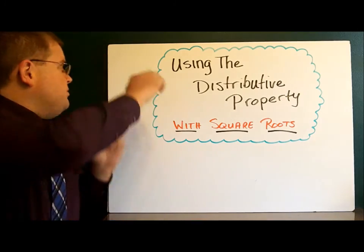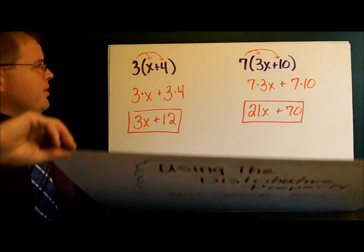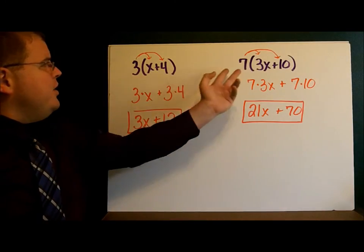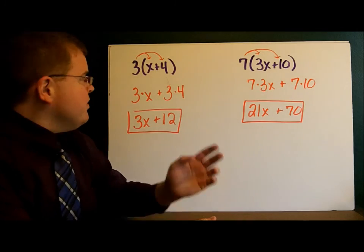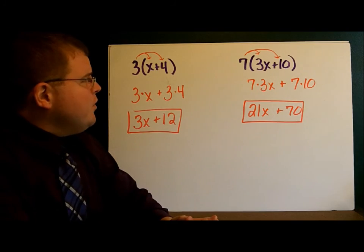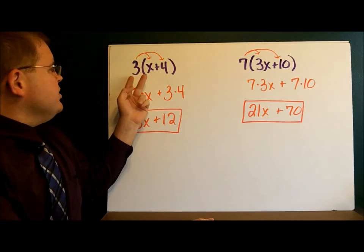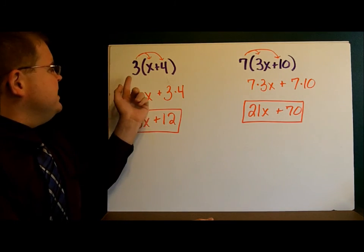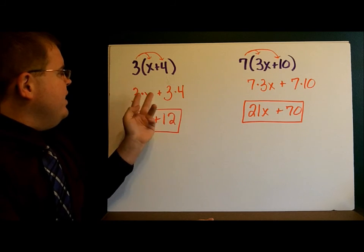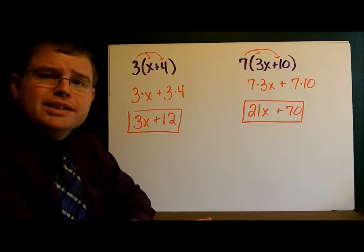Let's take a look at one example here. In our first example, we have some plain old numbers that we're going to look at. 3 times X plus 4, and when we use the distributive property, really what we do is we multiply the 3 by the X and the 3 by the 4. That gives us our 3X plus 12.